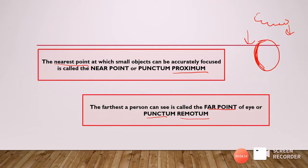The far point of the eye (punctum remotum) is the farthest point a person can see. It varies according to the refractive status of the person. An emmetropic person — a normal person — can see at infinity, so the far point is at infinity. In a myopic patient, the far point is in front of the retina, and in a hypermetropic patient it is behind the retina. In both these cases, the far point is not at infinity. To summarize: near point varies with age, and far point varies with refractive error.